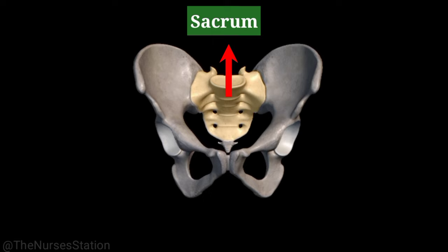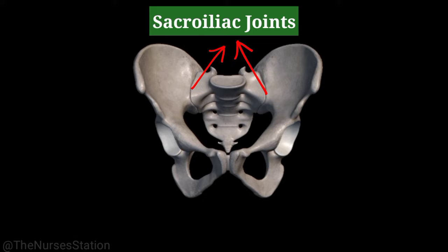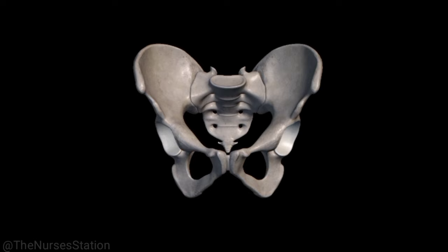One sacrum and one coccyx. The hip bones unite anteriorly at a joint called the pubic symphysis, and posteriorly with the sacrum at the sacroiliac joints. The complete ring composed of hip bones, pubic symphysis, and sacrum forms a deep basin-like structure called the bony pelvis. Together these three bones form the pelvic girdle, connecting the axial skeleton to the appendicular skeleton.